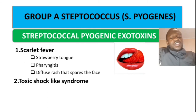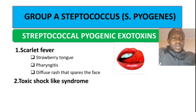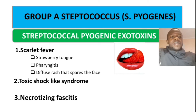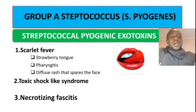The other condition is toxic shock-like syndrome. Remember, toxic shock syndrome is caused by Staph aureus, whereas toxic shock-like syndrome is caused by Streptococcus pyogenes. This toxin is a superantigen — it stimulates T cells to produce cytokines, leading to shock. The other condition is necrotizing fasciitis, which is inflammation of the fascia that can require surgical intervention or even amputation if serious.